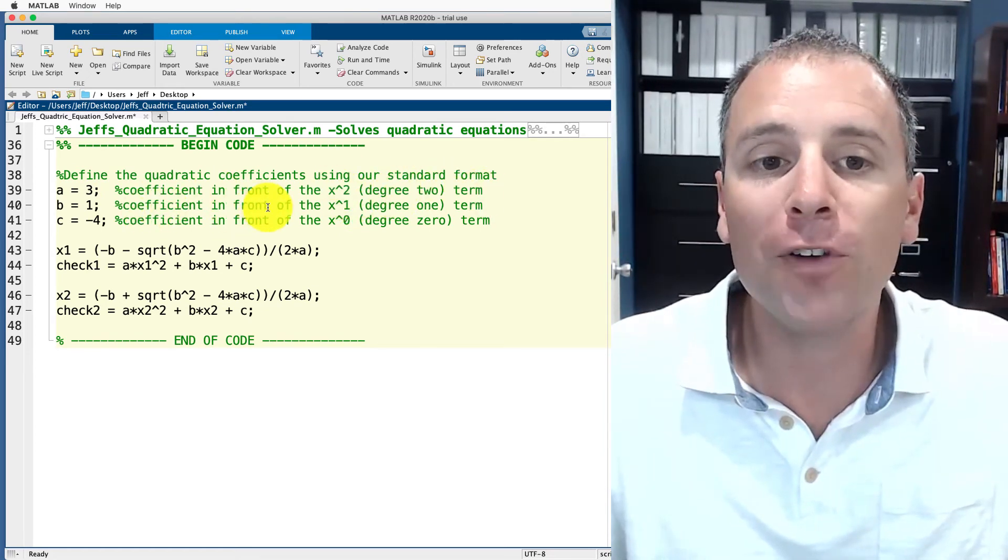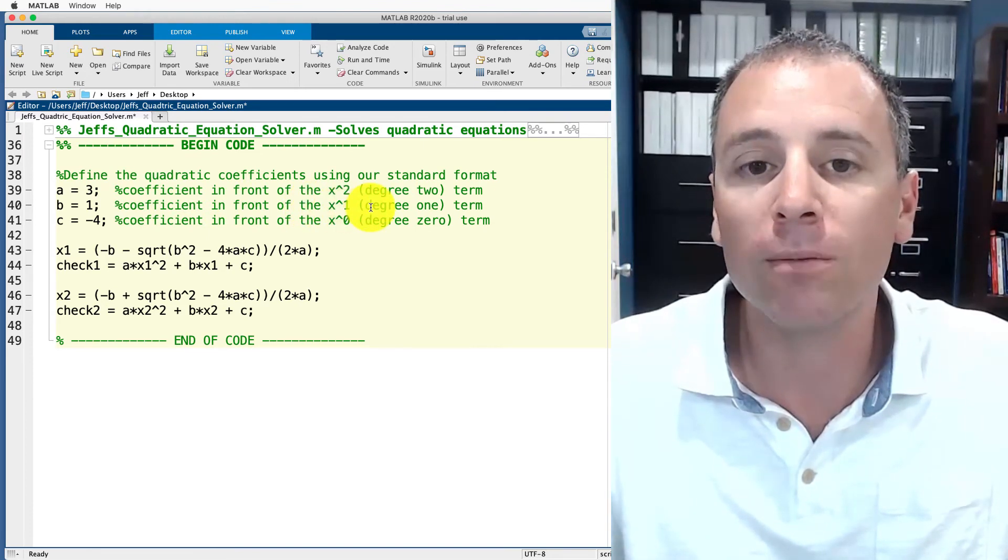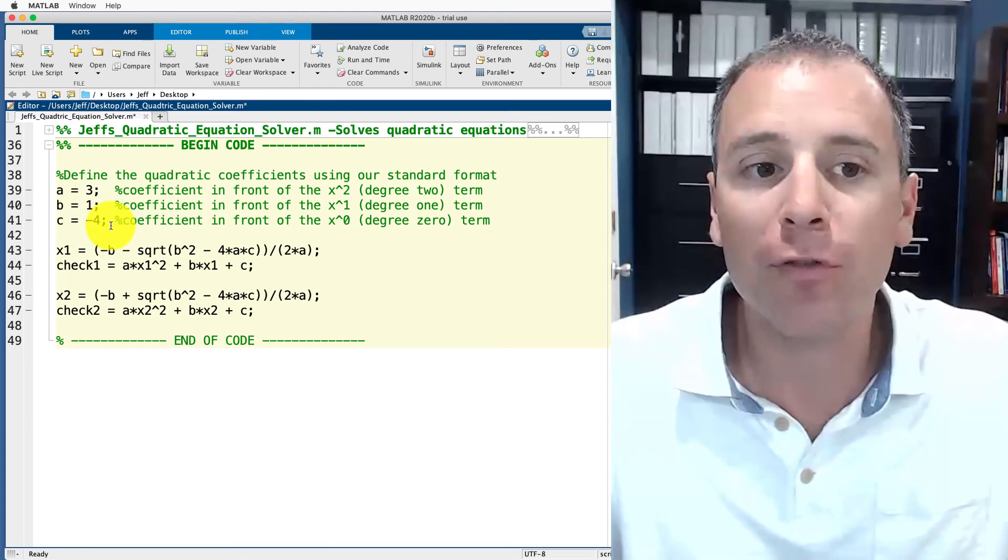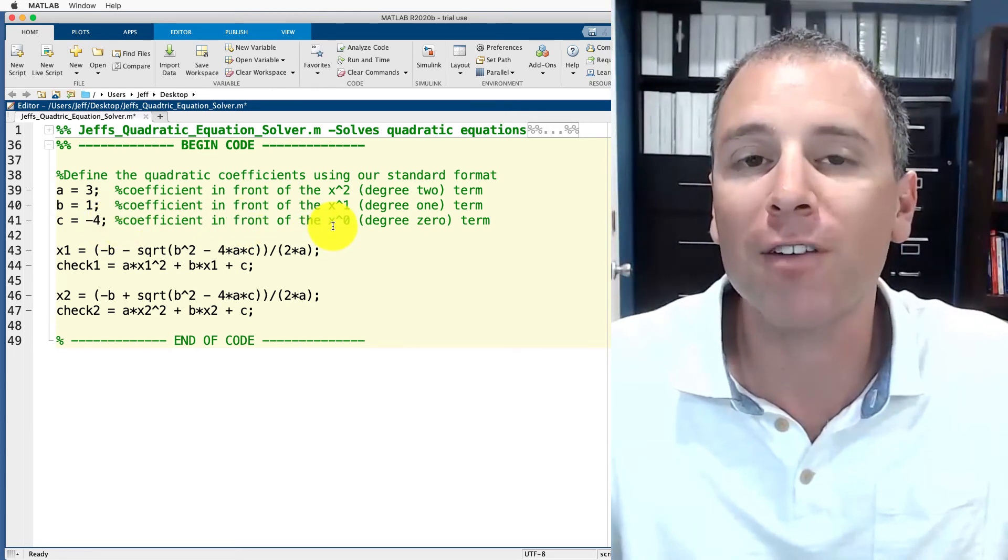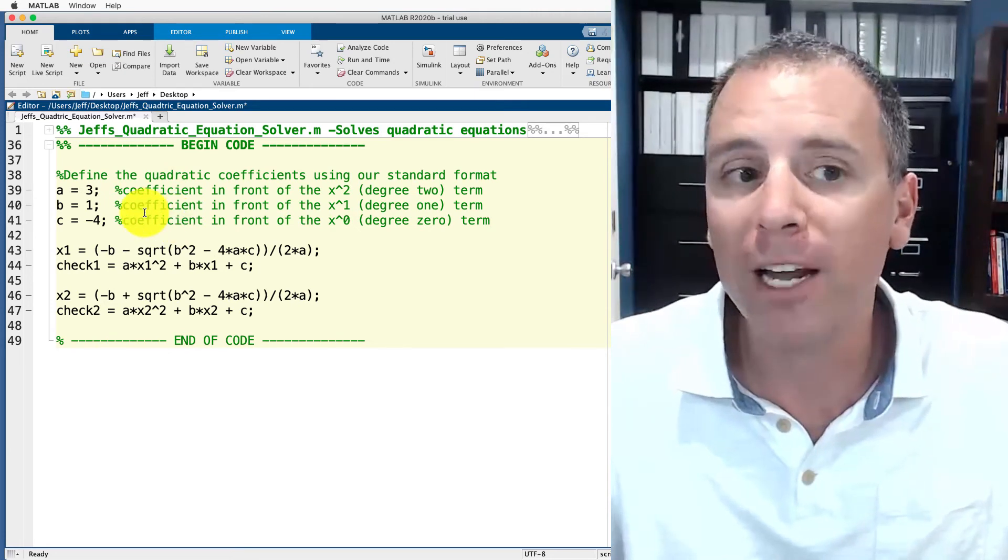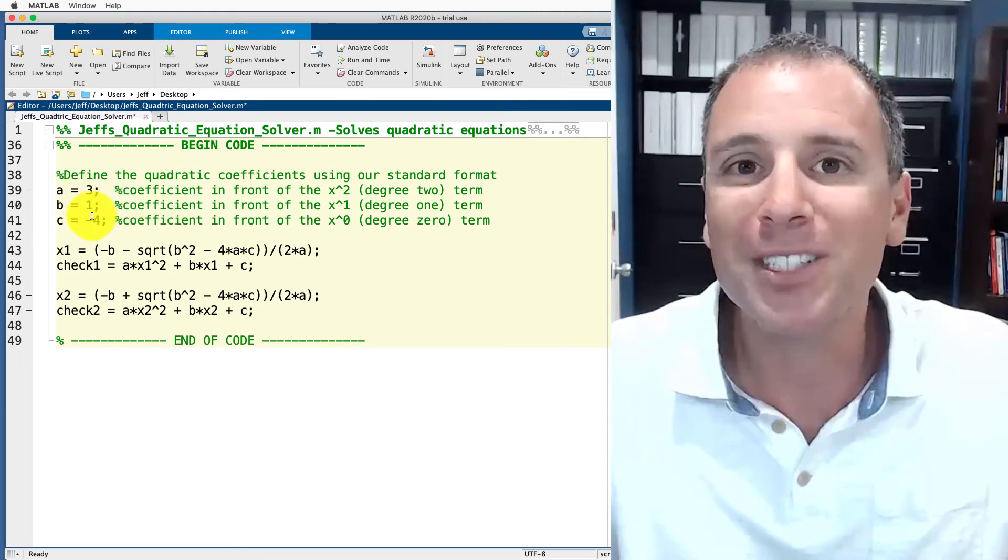B, I represent it as the coefficient in front of the x to the first term, also known as the degree one term. And then C is the constant coefficient, also known as the coefficient in front of the x to the zero term. This gives an immediate understanding for those people reading my code what each of those variables is designed to do.